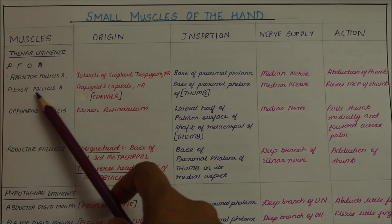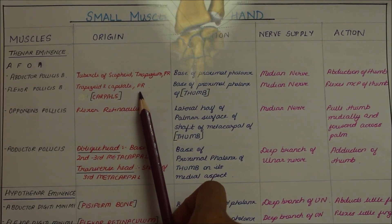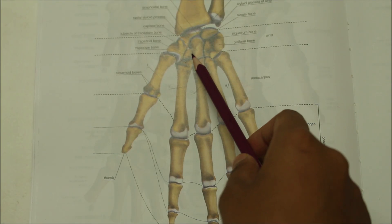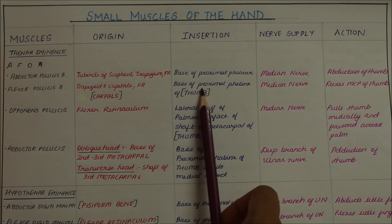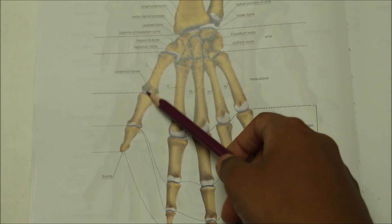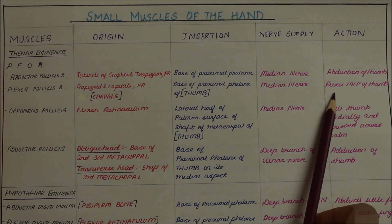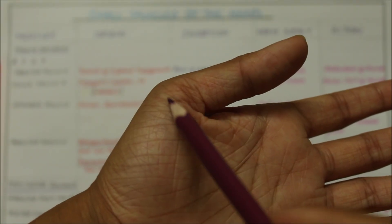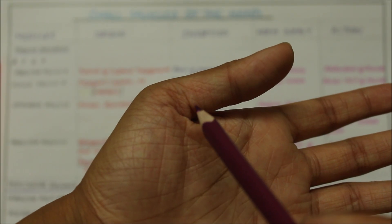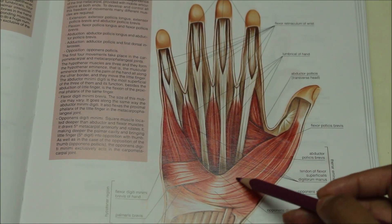Next we have the flexor pollicis brevis. It originates from the trapezoid and capitate as well as the flexor retinaculum. It inserts into the base of the proximal phalanx of the thumb. It is supplied by the median nerve. Its action is flexion at the metacarpophalangeal joint of the thumb.